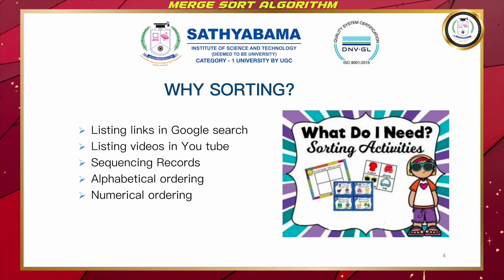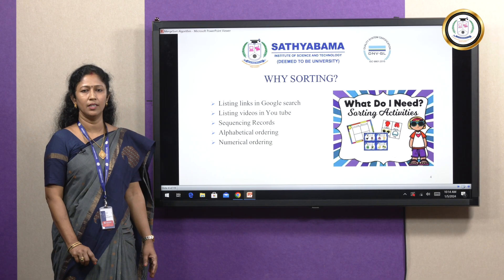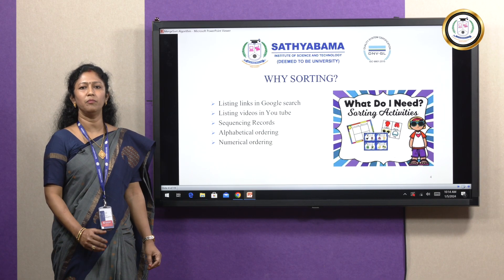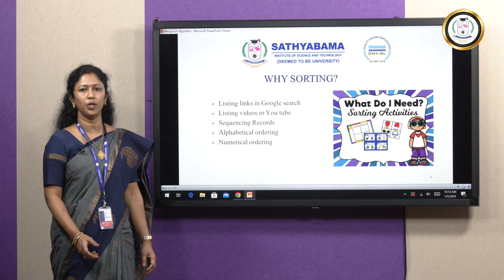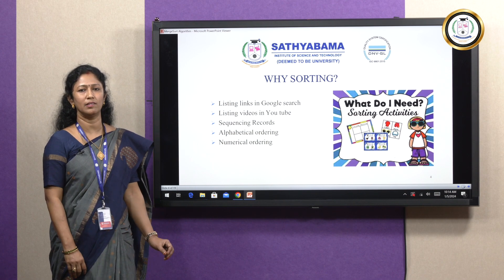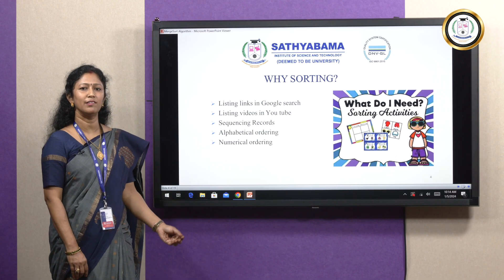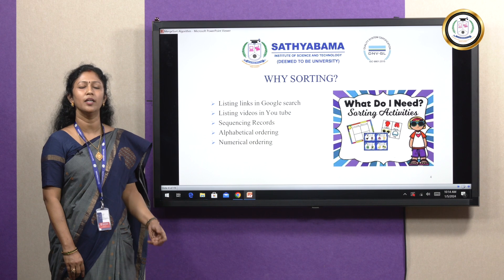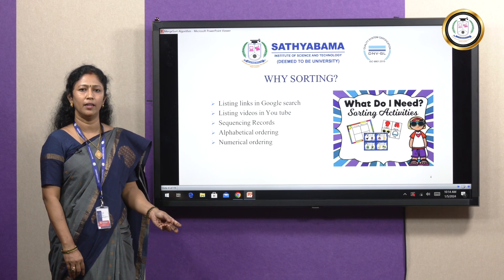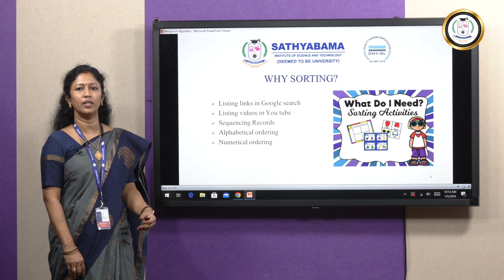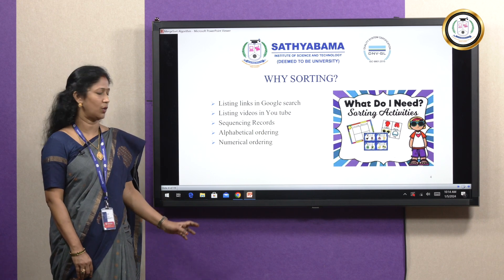Why sorting is required: there are several requirements. When you perform a Google search, based on the keyword, links are arranged and listed in order. When you search for a video on YouTube, videos are displayed based on some arrangement. When you retrieve records from a database, elements are arranged and displayed, or when viewing student records based on alphabetical order, mark list, or rank list — in those cases, we need sorting.